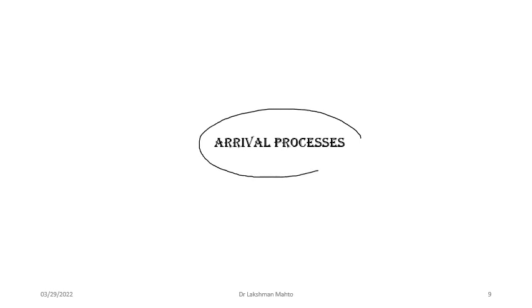The third part of today's lecture — arrival processes — will likely be covered in the next class. A supermarket is a practical example: customer arrivals follow a random process. The simplest model for an arrival process is the Bernoulli process; a more complex model is the Poisson process. We will study further types of random processes in subsequent sessions.